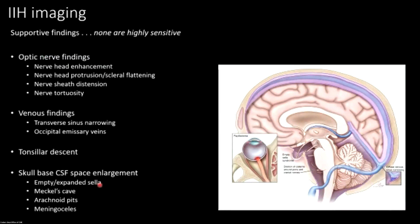So what do we see on imaging? These things are supportive but not in themselves diagnostic — all changes related to CSF volume and pressure, pretty much squishing other things. In a lot of ways it's the opposite of SIH. There are changes that happen to the optic nerve, changes in the veins, possible tonsillar descent, and enlargement of the CSF spaces with remodeling of bone, particularly at the skull base.